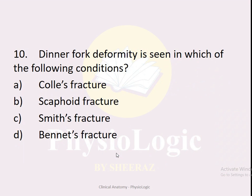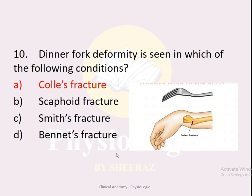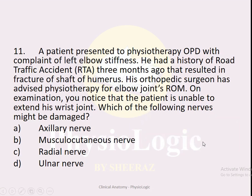MCQ number ten: Dinner fork deformity is seen in which condition? Options: A — Colles' fracture, B — scaphoid fracture, C — Smith's fracture, D — Bennett's fracture. The correct option is A — Colles' fracture, which results in a dinner fork-like deformity.